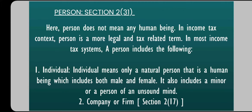So, who all are included in 'person' under Section 2(31)? In most income tax systems, a person includes the following. First is Individual. The one who is subject to pay the taxes can be an individual — you and I both can be individuals subject to pay taxes in the future. Individual means only a natural person, that is a human being, which includes both male and female.